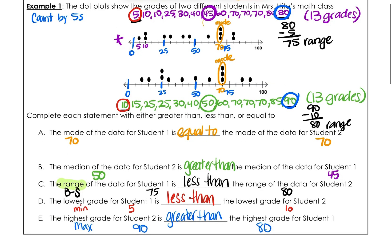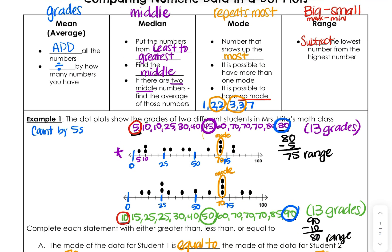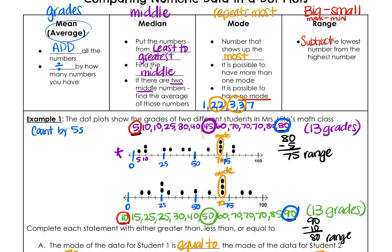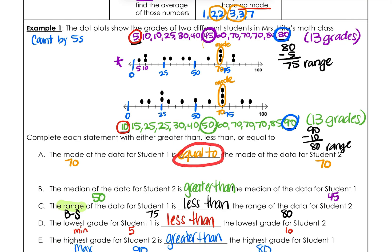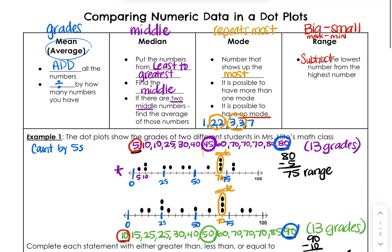That's how we use vocabulary and comparisons for dot plots. Big things to remember: mean is how we find grades; median is the middle; mode is the one that repeats the most — on a dot plot, it's the tallest tower, which we circle and label; and range is big minus small. The comparison word describes the number in front of it. Go practice dot plots!